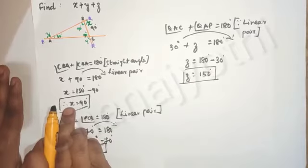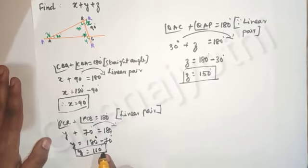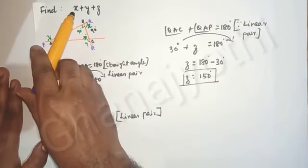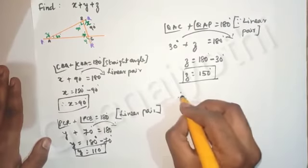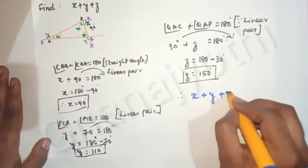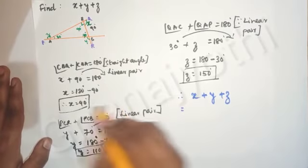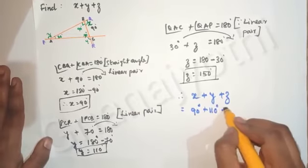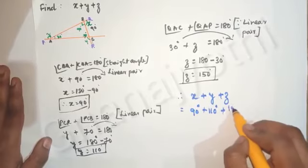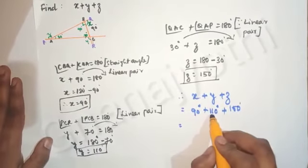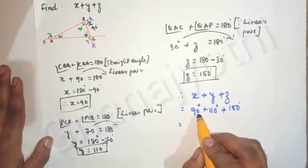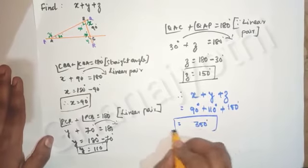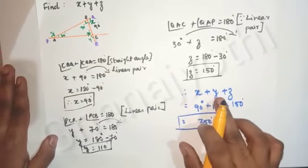Dear students, we found the values: x is equal to 90 degrees, y is equal to 110 degrees, and z is equal to 150 degrees. So x plus y plus z is equal to 90 plus 110 plus 150 degrees. 90 plus 110 equals 200 degrees, and 200 plus 150 equals 350 degrees. Therefore the value of x plus y plus z is 350 degrees.